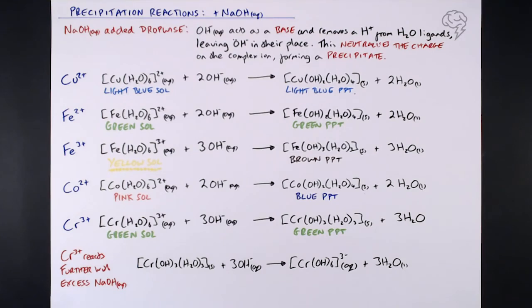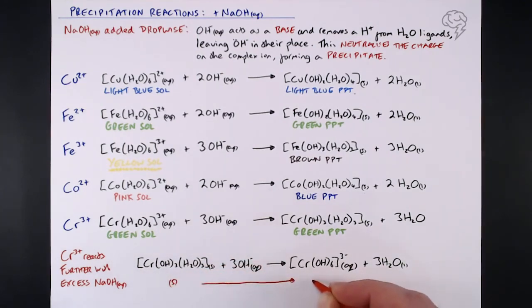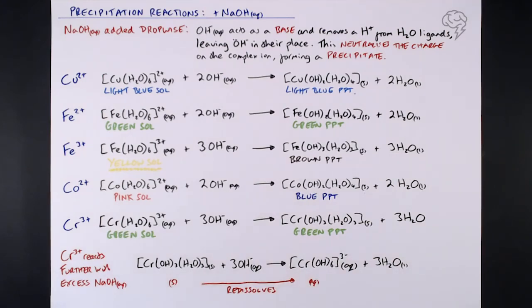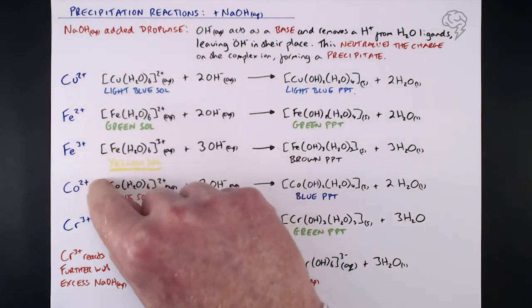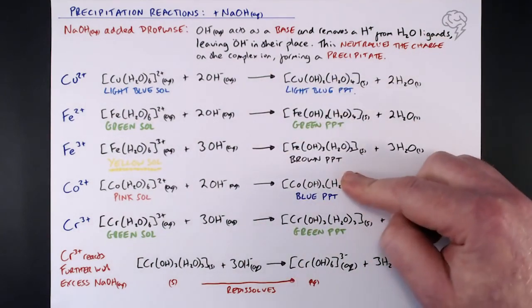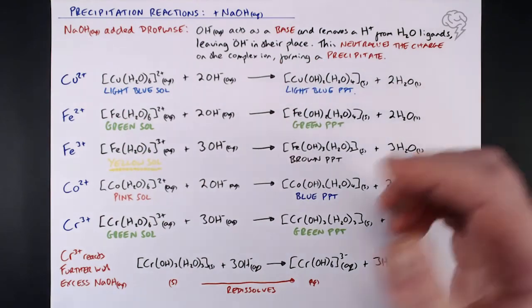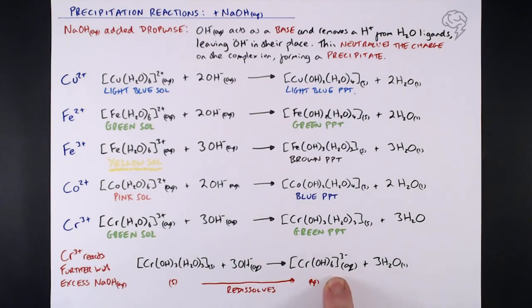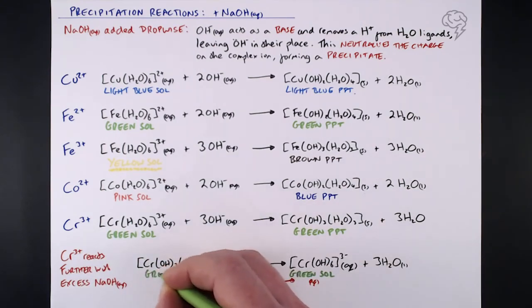So the precipitate re-dissolves — the solid precipitate that initially forms when you add some sodium hydroxide will re-dissolve when you add excess, forming another aqueous complex ion. Why does it end up aqueous? Because it's got a 3− charge now, so it dissolves in water. That's the only one of these five that does that. You can add as much sodium hydroxide as you like to the other four and those precipitates will not re-dissolve. We only get that neutralization reaction with the other four, with OH⁻ acting as a base. CR3+ being an exception — if you add excess, it re-dissolves to give a green aqueous solution.